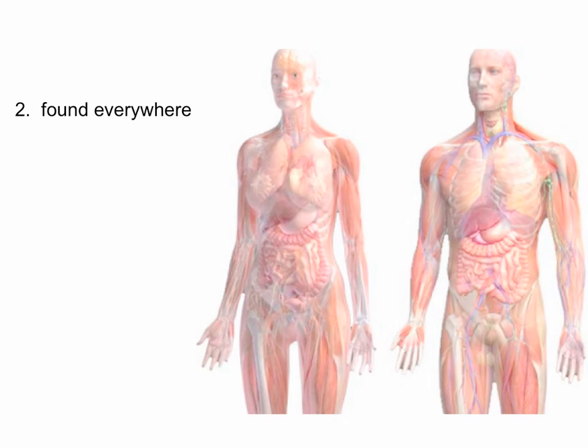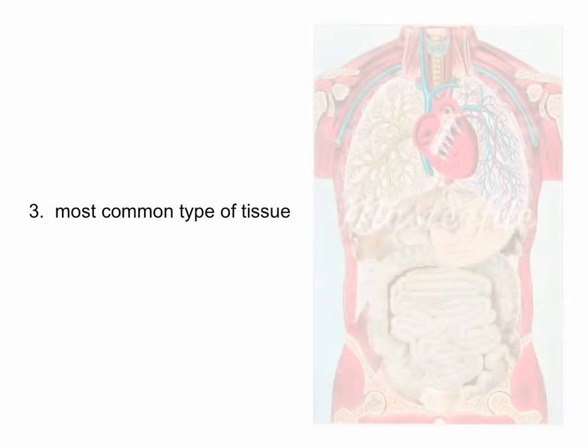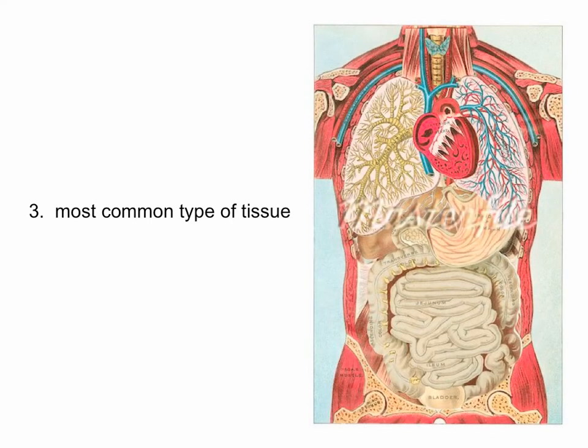Connective tissues are found everywhere — you couldn't name a system where they weren't found. They're the most common type of tissue, and we'll find them in whatever dissections we do later in the year. When we study bones in a couple of weeks, we'll find connective tissues there too.